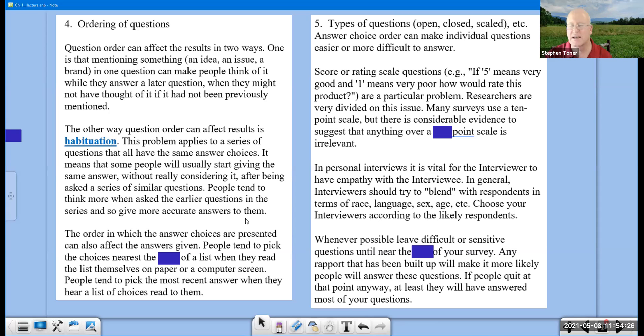The order in which the answer choices are presented can also affect the answers given. People tend to pick the choices that are nearer to the start of the list when they read the list themselves on paper or on a computer screen. People tend to pick the most recent answer when they hear a list of choices read to them. Whereas with reading, the ones that you read sequentially first tend to stick in your brain and be answered more often.